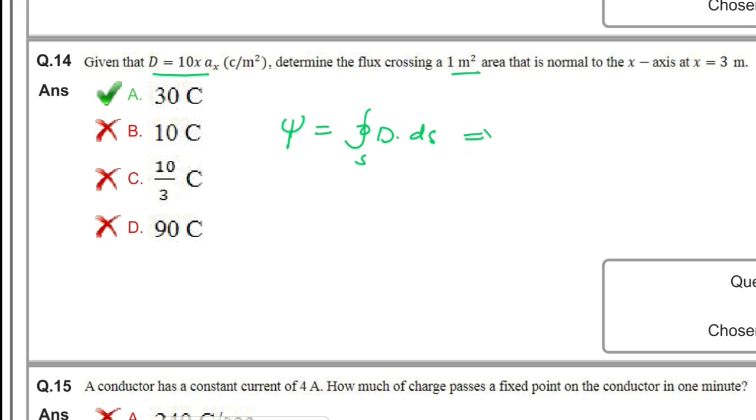The flux or charge is given by ψ = surface integral of D·ds, which can be written as ψ = D × area. Here x is at 3 meters, so charge = 10 × 3 × 1 m². The units are coulombs per meter squared × meters × meter squared, which gives 30 coulombs. A is the right option.